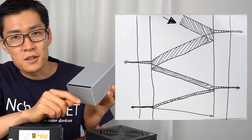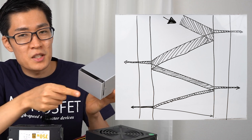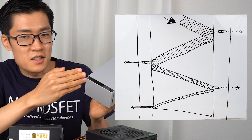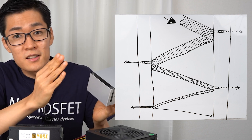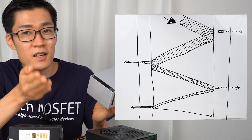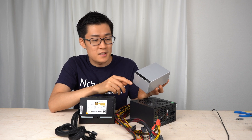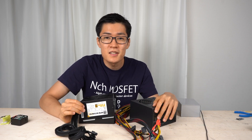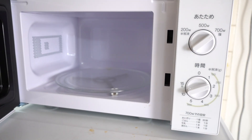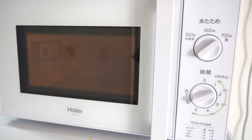Metals also absorb a small amount of electromagnetic waves. Some waves are absorbed by the metal and the rest are reflected; the reflected waves hit another place and a small amount are absorbed again, then the rest are reflected again. By repeating this process, the electromagnetic waves attenuate. The microwave oven we used earlier utilizes this mechanism — a microwave is made of a metal box, and 2.45 gigahertz electromagnetic waves are reflected inside it.